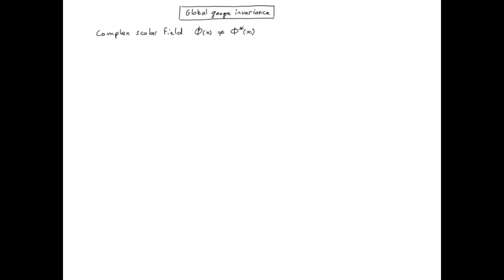Another classic example of the application of Noether's theorem is in the case of a complex field with a Lagrangian which is globally gauge invariant. A global gauge transformation is just applying a constant phase everywhere to the field. These are also called U(1) transformations, which only involve a C-number, which can also be seen as a one-by-one matrix — that's what the 'one' stands for — and these transformations are also unitary, which is what the 'U' stands for.